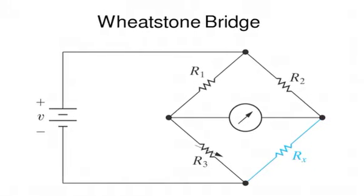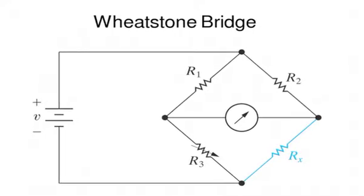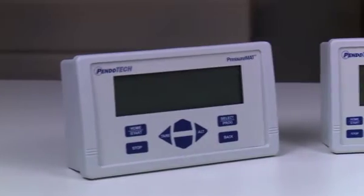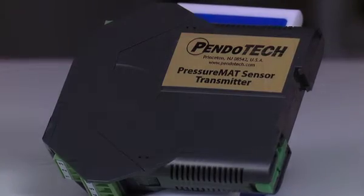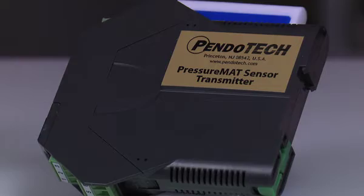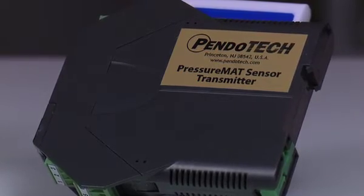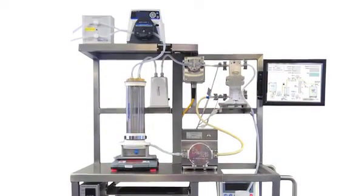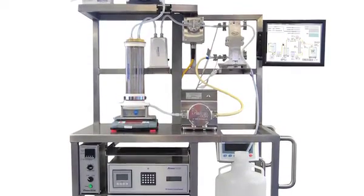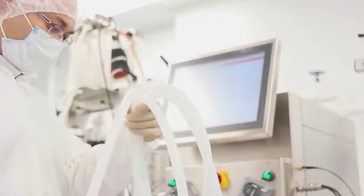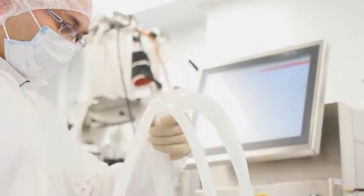Options include the line of pressure mat monitors, the pressure mat transmitter cards for DIN rail installations, a Pentotech process control system for process development applications, and customer designed electronics often used by OEMs.